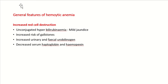The general features of hemolytic anemia include: first, increased red cell destruction leading to an increase in unconjugated hyperbilirubinemia, which causes mild jaundice. There will be increased risk of gallstones, increased urinary and fecal urobilinogen, and a decrease in hemoglobin and haptoglobin levels.